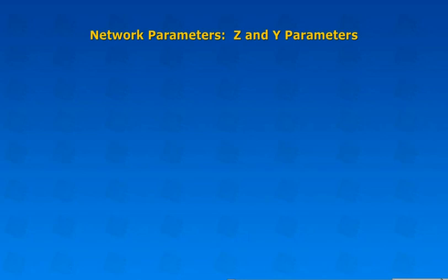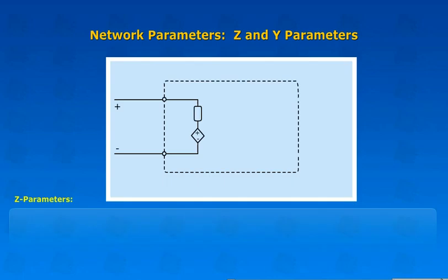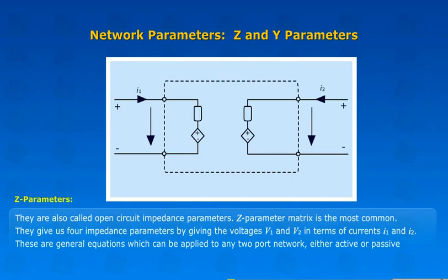Network Parameters: Z and Y Parameters. Z Parameters are also called Open Circuit Impedance Parameters. Z Parameter Matrix is the most common.